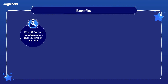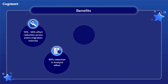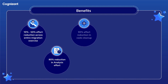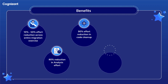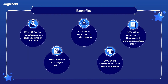The framework provides 10–50% effort reduction across the entire migration exercise. It leads to up to 80% reduction in analysis effort, almost 90% effort reduction in code cleanup, up to 90% effort reduction in RV-to-EMS conversion, and nearly 95% effort reduction in deployment artifact generation.